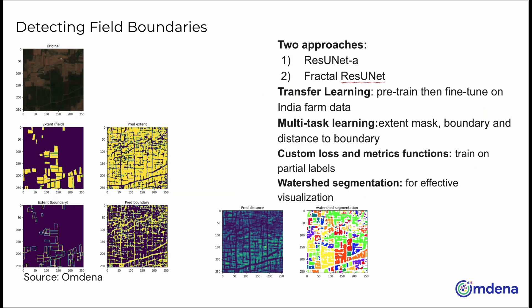The team produced two models for the field boundary delineation model following existing published research on state-of-the-art methods. The first one is in TensorFlow and uses a ResUnet architecture, which has a UNet backbone with multiple parallel Atrous convolutional layers with different dilation rates.